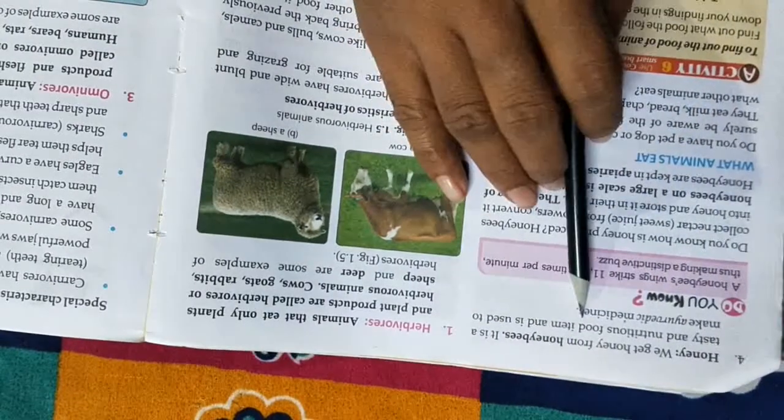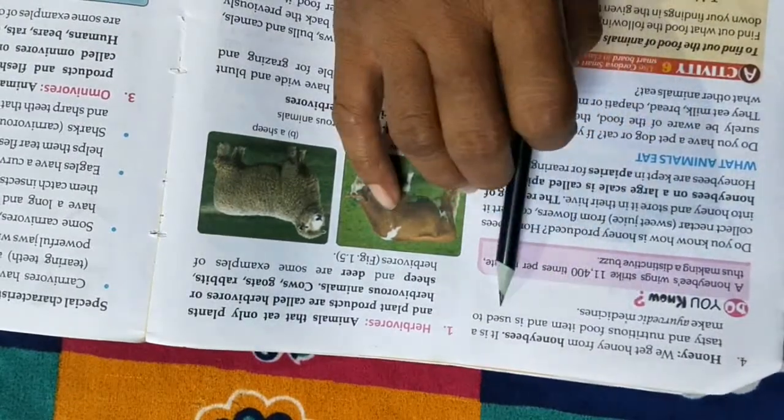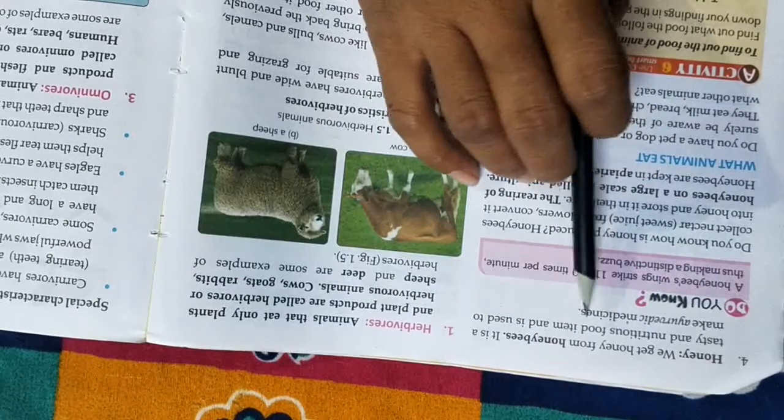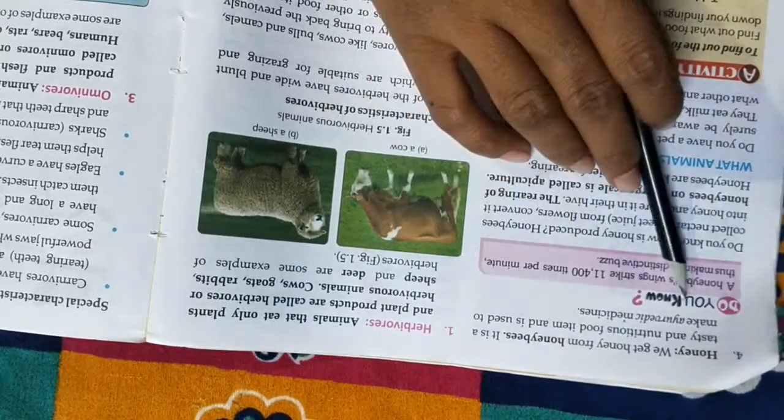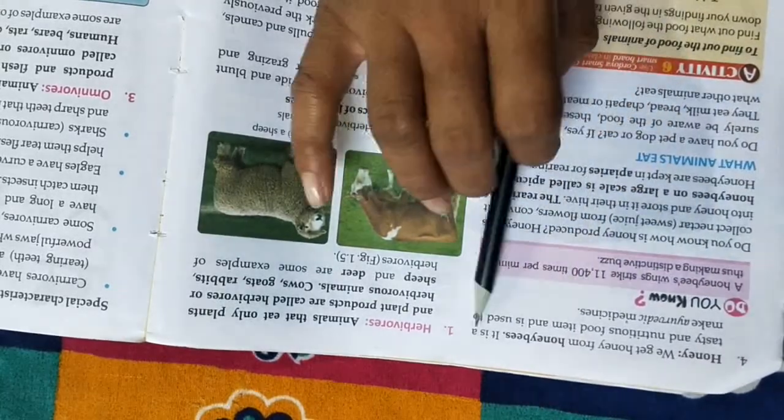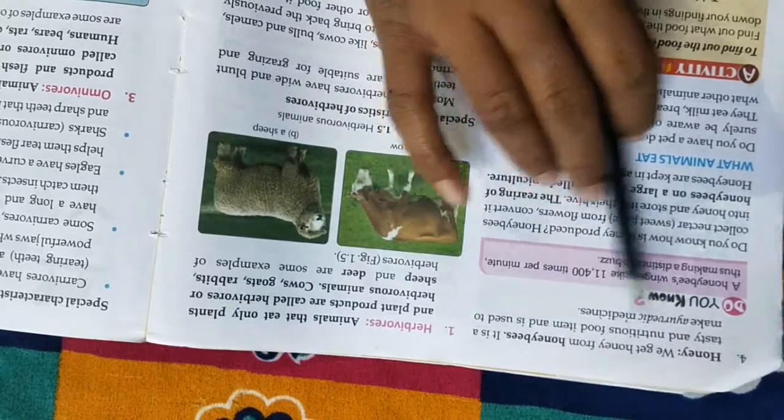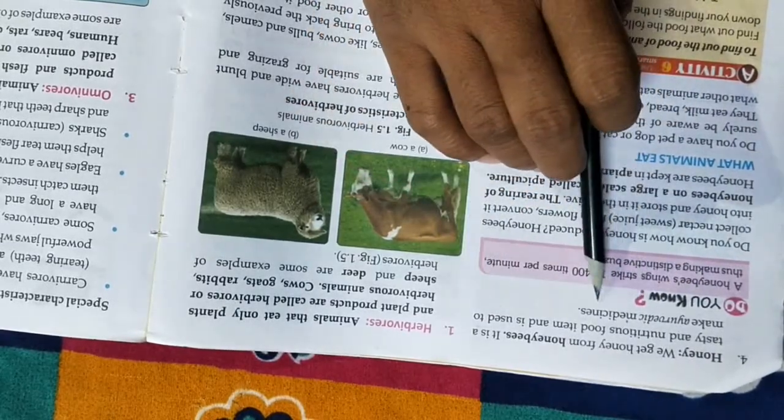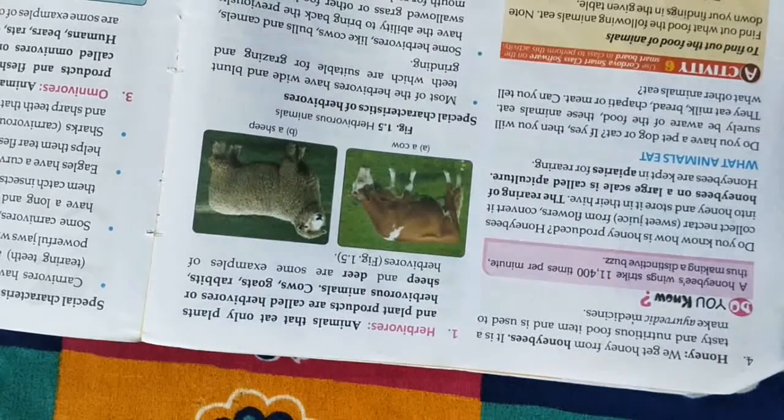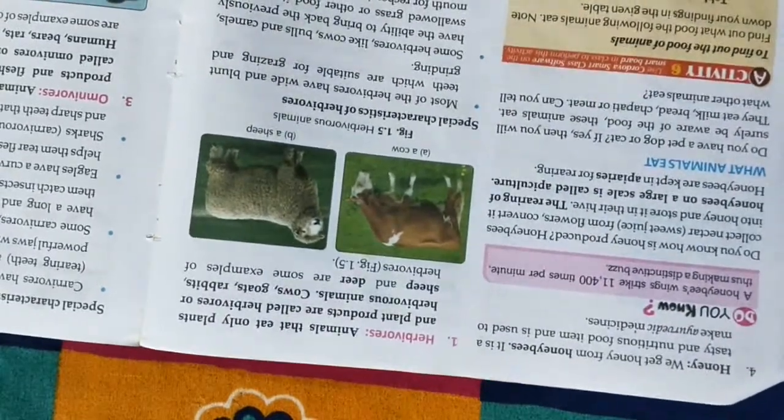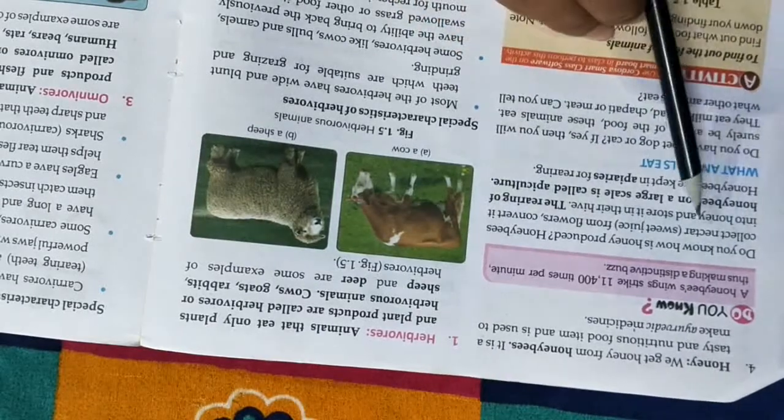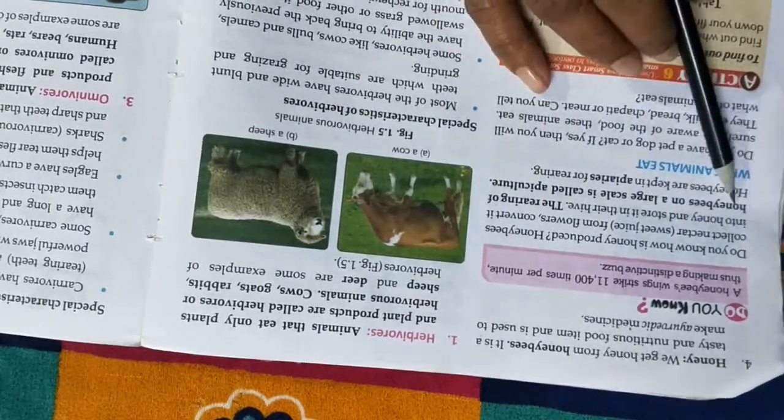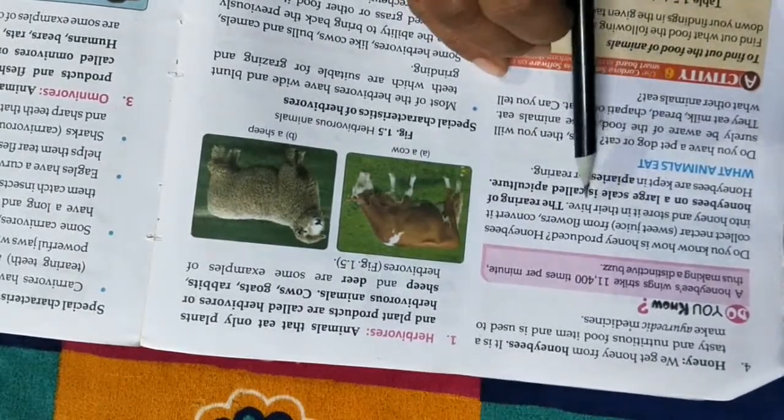Next, honey. We get honey from honeybees. It is a tasty and nutritious food item and is used to make Ayurvedic medicine. How is honey produced? Honeybees collect nectar from flowers, convert it into honey, and store it in their hives.